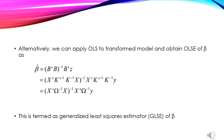Substituting B = K⁻¹X and Z = K⁻¹Y into the OLS formula for the transformed model, we get beta hat equals (B'B)⁻¹B'Z, which simplifies to beta hat equals (X'Ω⁻¹X)⁻¹ X'Ω⁻¹Y. This is termed the Generalized Least Squares Estimator (GLSE) of beta.